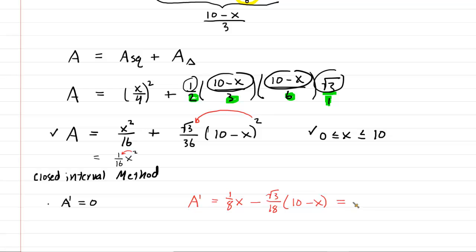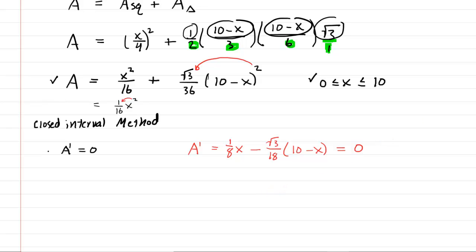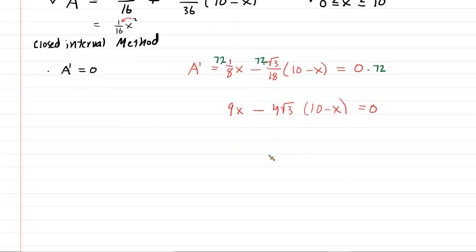Now, as we noted, we have to set this equal to 0. This is going to allow us to find our so-called critical number. Now, solving this isn't the most pleasant thing in the world. And perhaps we could multiply each term by 72. That will turn out to work nicely here. We're going to multiply this by 72, this by 72. And technically, the right side needs to be multiplied by 72 as well. 72 times 1/8 is basically 72 divided by 8. So that's just 9 and then x minus 72 divided by 18 should be 4. So then you'll have that 4 times the radical 3 and then times the 10 minus x. This is still equal to 0.